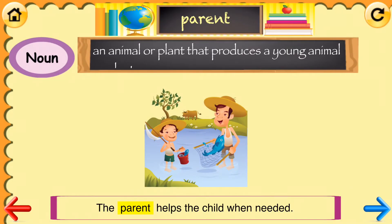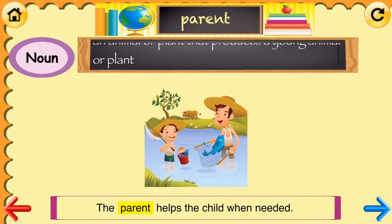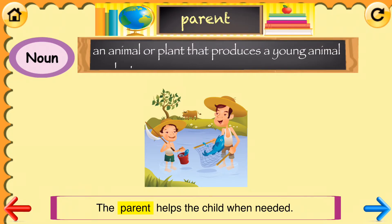Parent. Parent means an animal or plant that produces a young animal or plant. Parent is a noun. An example of parent is: the parent helps the child when needed.